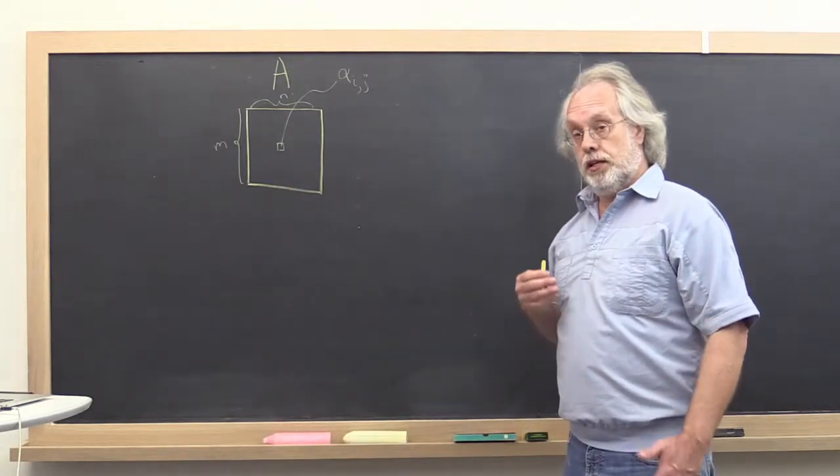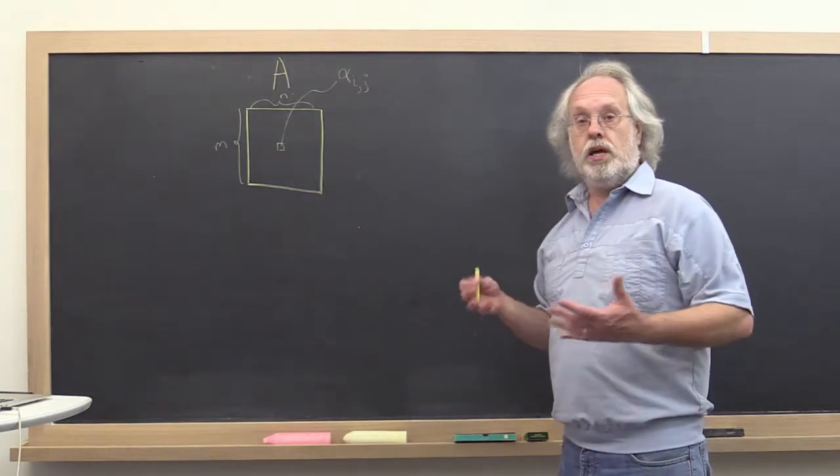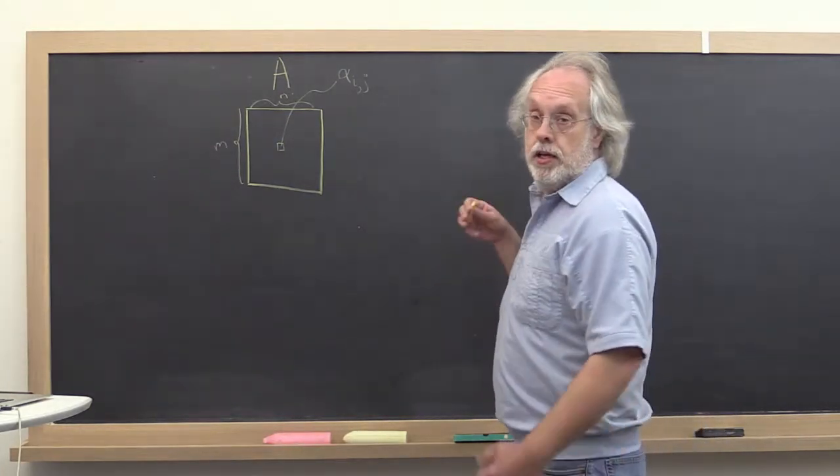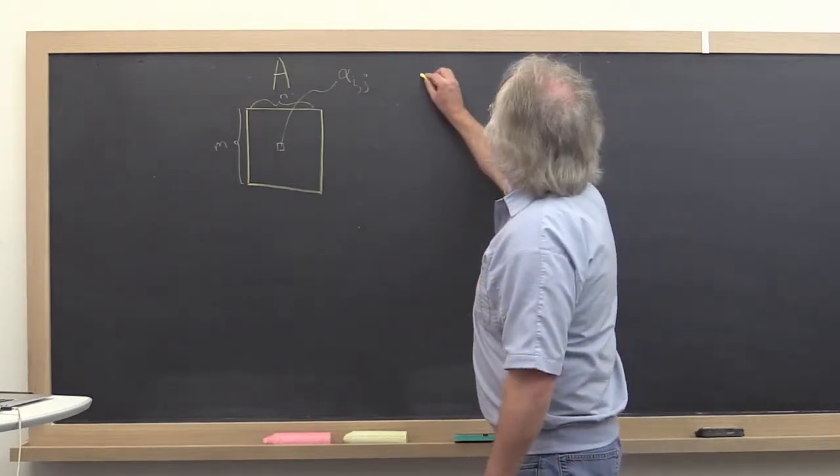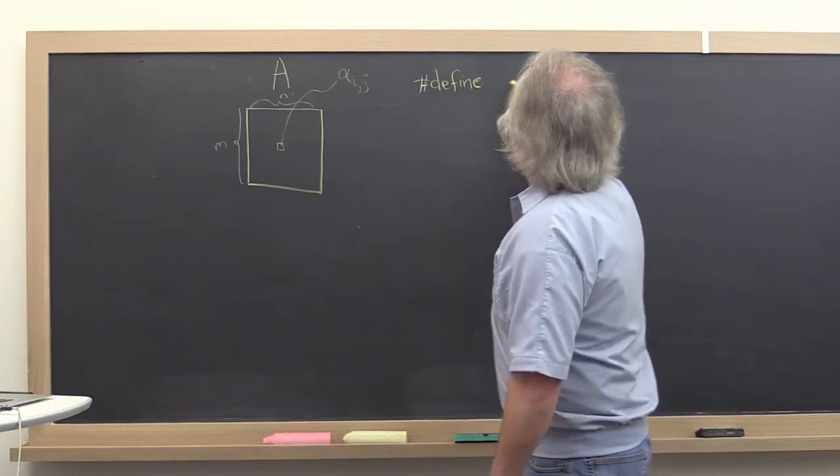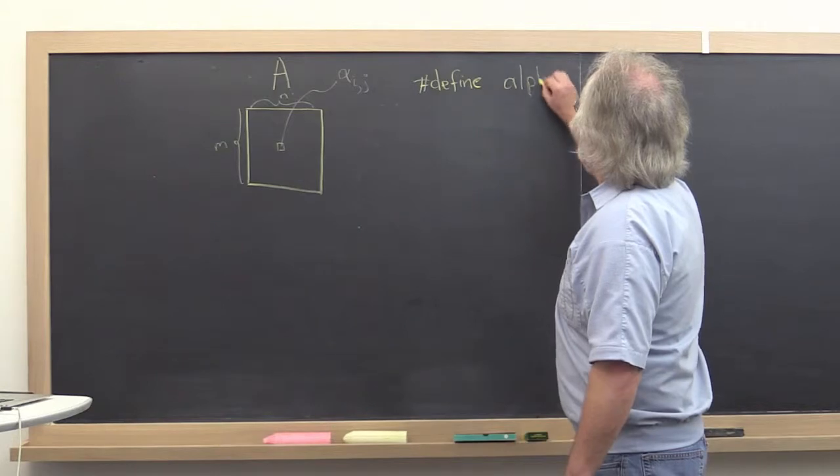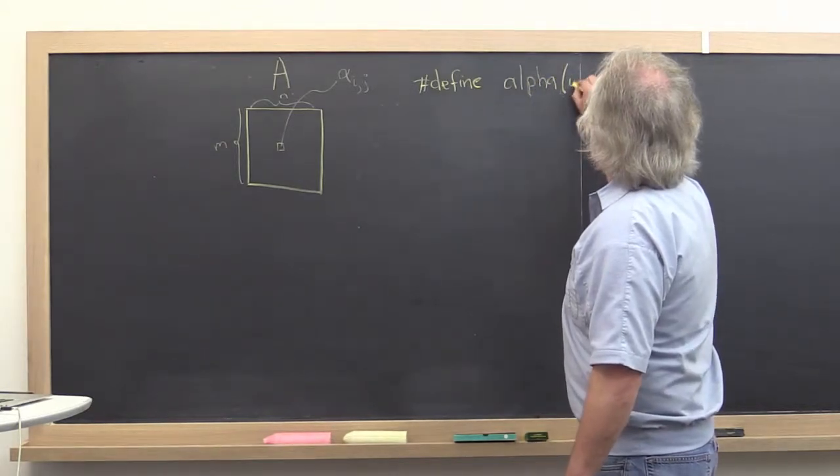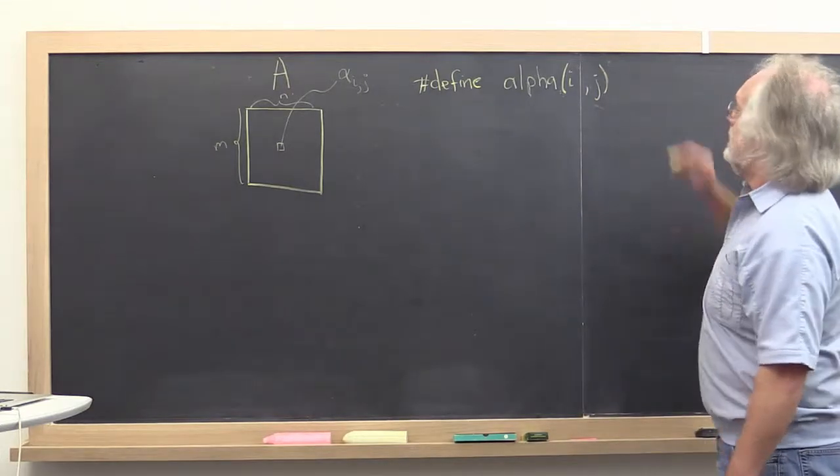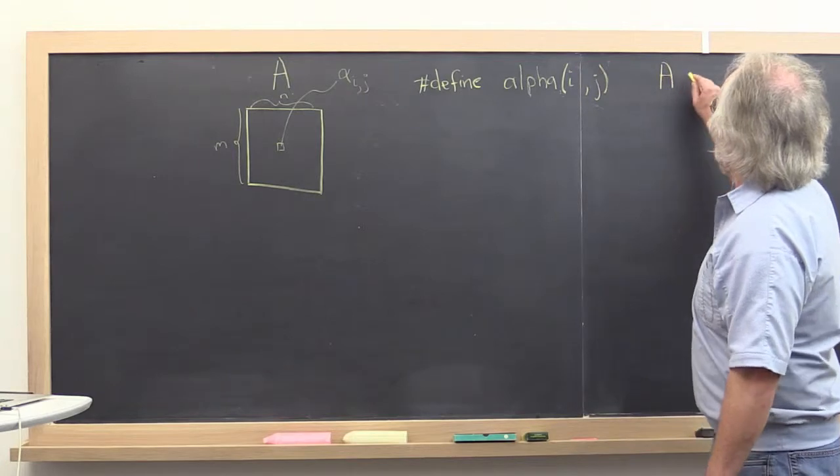In the previous unit, we came up with a way of indexing this where we defined a macro alpha which took arguments i and j and translated that into where in memory this is located. If the array was called A,